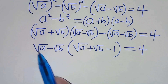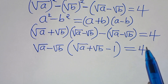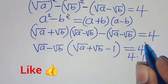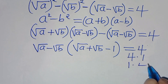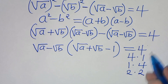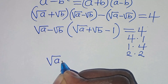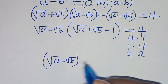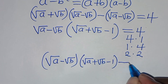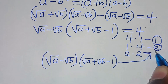From here we have two factors: (√a − √b) and (√a + √b − 1), whose product equals 4. We can express 4 as a product in three ways: 4×1, 1×4, or 2×2. This gives us three cases to consider.